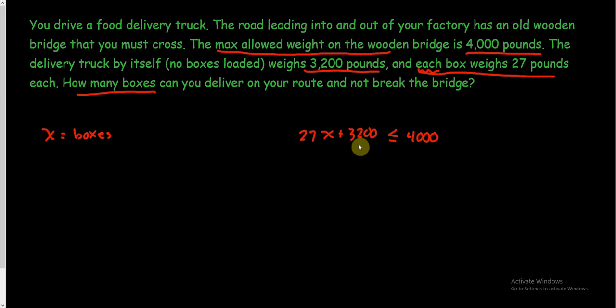I've modeled this thing, I should be able to solve it. I need to get x by itself. I need to move the 3200 first, so subtract 3200 from both sides. 27x is less than or equal to 4000 minus 3200, which is 800. If you need a calculator, use a calculator, there's no shame in that.